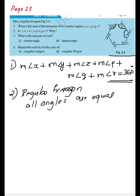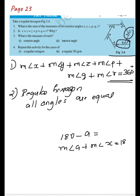Here you can see that the exterior angle is obtained by subtracting the interior angle from 180 degrees. To get exterior angle x, you subtract a from 180 degrees, because a and x form a linear pair. A linear pair means measure of angle a + measure of angle x = 180 degrees.